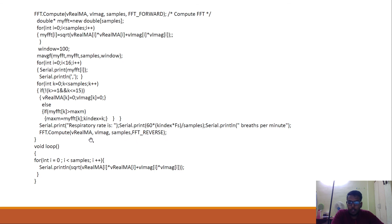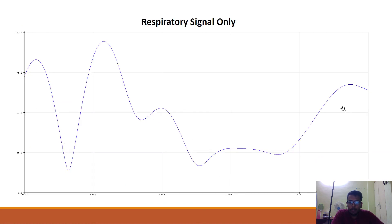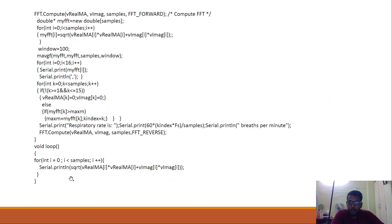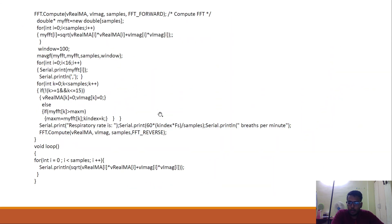After zeroing out beyond index 15, we get the frequency response zeroed out above 0.5 Hz. Then we take the inverse Fourier transform and print the signal. We get 17.58 breaths per minute as the respiratory rate, and we get the respiratory signal printed. We can also print the signal containing only the PPG component — by removing the NOT condition, the frequency domain magnitude spectrum from index 1 to 15 is zeroed out and the rest of the frequency domain signal is kept. When we take the IFFT of that, only the PPG signal remains.